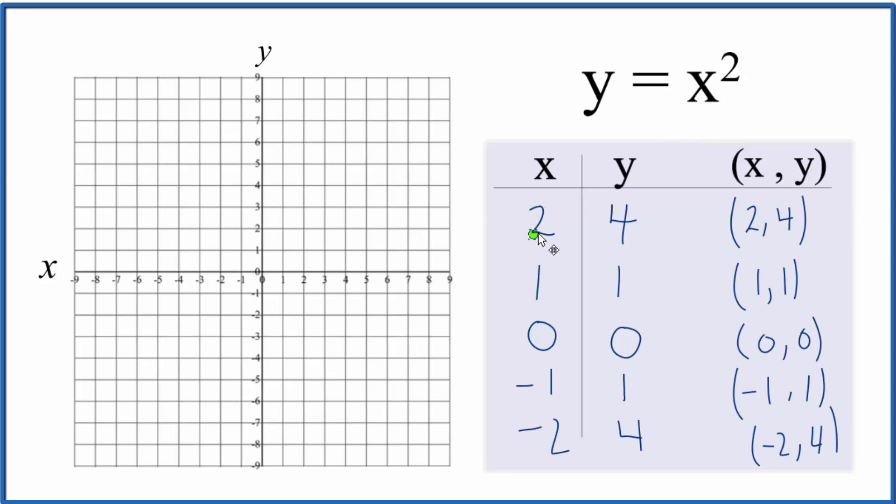Let's start out, we have 2 for x and then y is 4, so 1, 2, and we go up to 4. That's our first point. Then we have x is 1, y is 1. x is 1, y is 1. 0, 0, that's right here at the vertex. Negative 1, 1, so negative 1 and we go up to 1 there. And finally, negative 2 for x and then 4 for y.